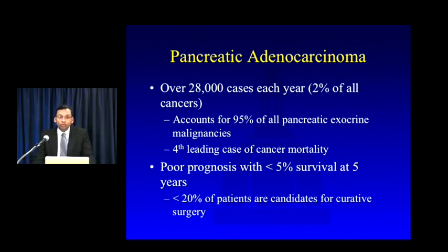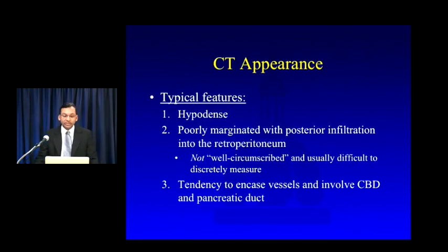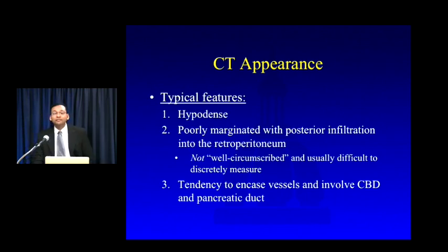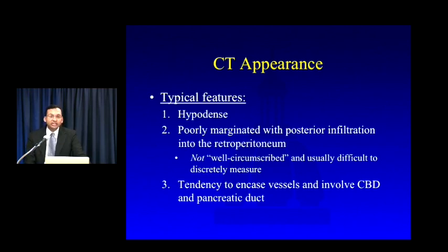Its poor prognosis is what makes pancreatic cancer so significant — less than 5% survival at five years, and less than 20% of patients are candidates for curative surgery at presentation. Most adenocarcinomas have typical features: hypodense tumors that are very poorly marginated, infiltrative, often infiltrating posteriorly into the retroperitoneum. These are not well-circumscribed lesions. Unlike neuroendocrine tumors, it is very difficult to draw discrete margins around an adenocarcinoma, and in many cases it can be very difficult to discretely measure the tumor.